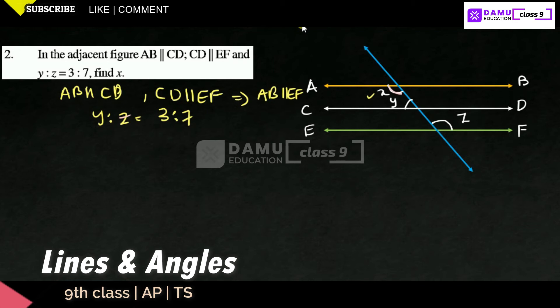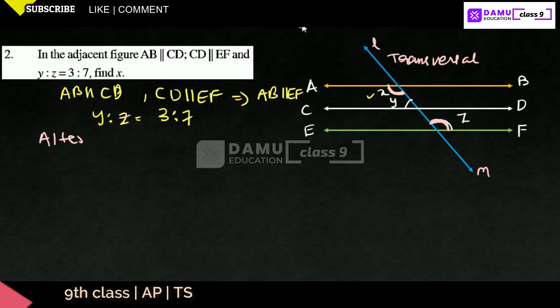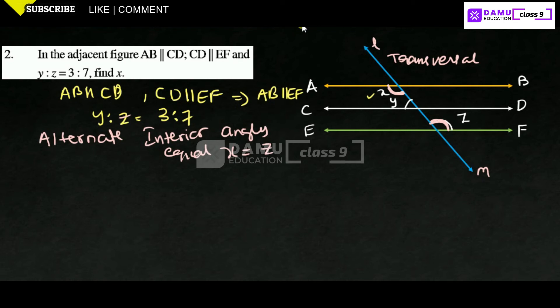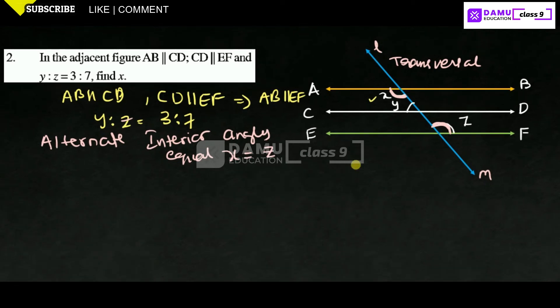Since alternate interior angles are equal — the angles inside the parallel lines on opposite sides of the transversal — with transversal LM cutting the parallel lines, we get x equals z.